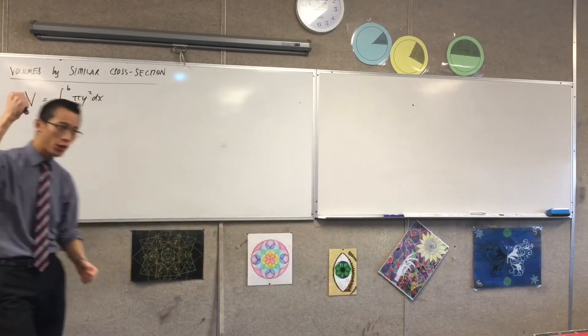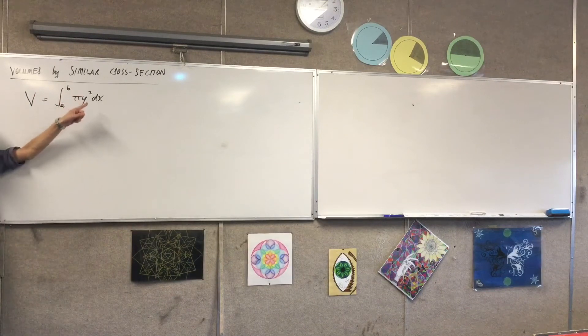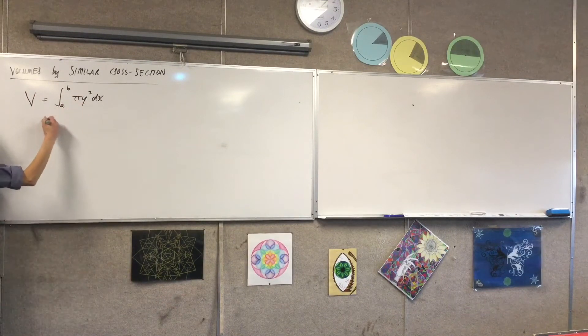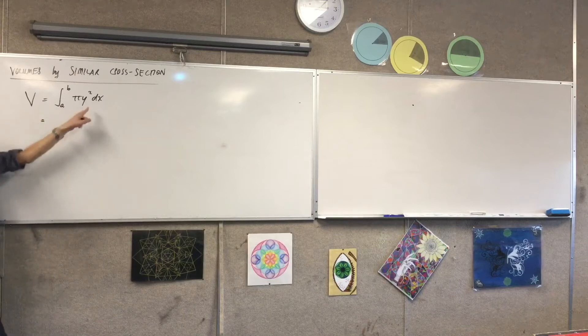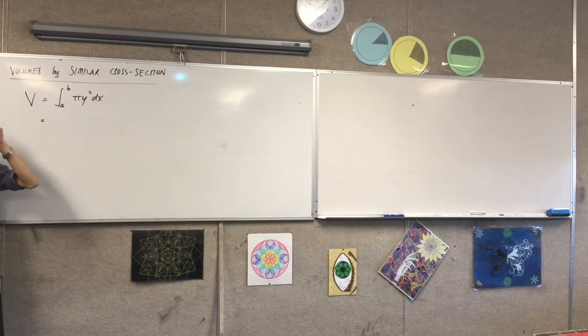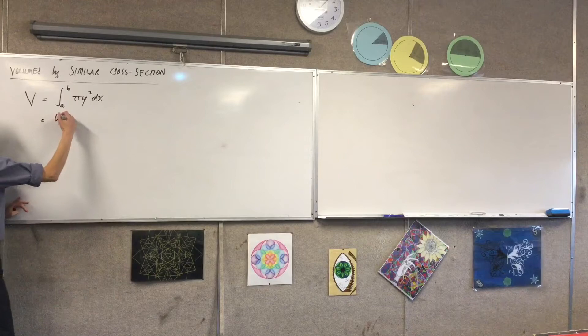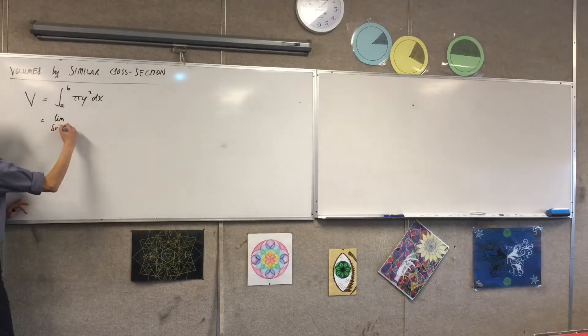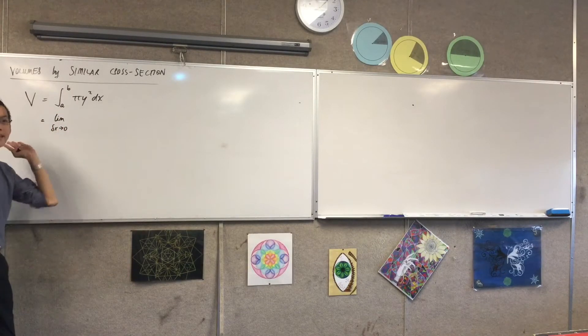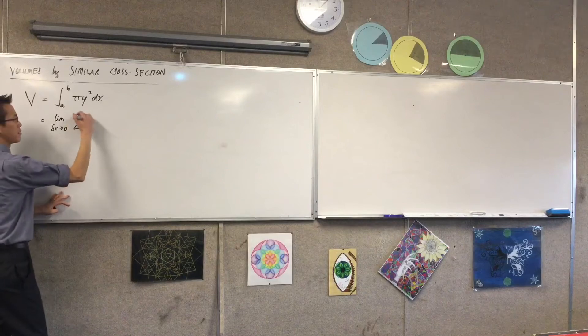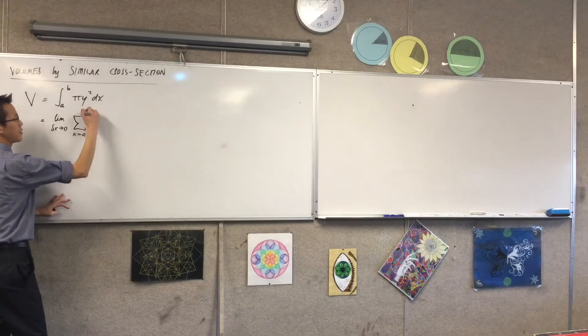But we opened the hood. And we said, what's really going on under here? Actually, what this dx disguises is that there's this delta x, which is getting very, very little. So this is really the limit as x approaches zero. And it's a sum on the same boundaries of what?